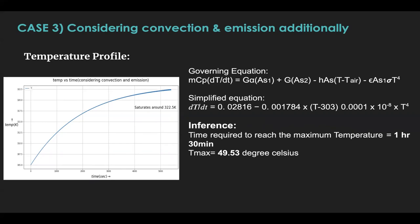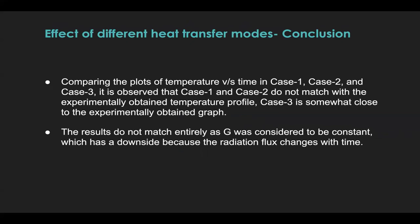This temperature profile is a much more closer depiction of the experimental results. However, in the analysis of the three cases that we had, we consider G to be a constant. Now, this is not a realistic assumption. This is because we can expect that during the duration of the experiment, solar radiation flux would have decreased because the sun's rays would become more slant and diffused and the intensity would have reduced.